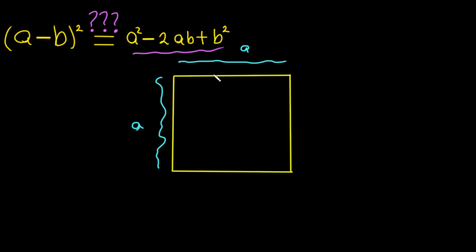Now let's cut it here — I'll write it in green color. Let's call the distance from here to there 'b'. So if we call this 'b', this one will be the same here. So from here to there it will be 'b', and the same here it will be 'b' as well, and of course here it will be 'b'. Since we have b, b, b, b on all sides...